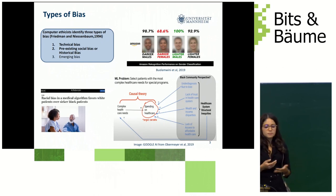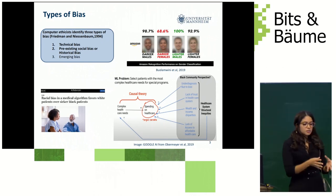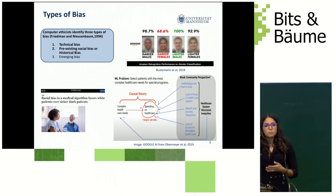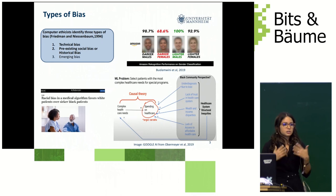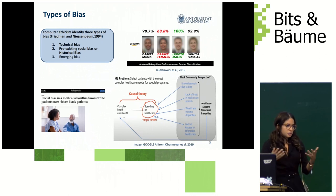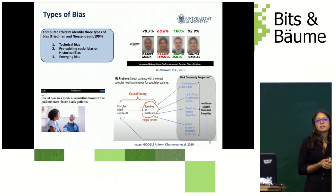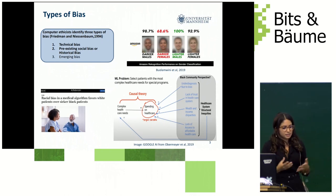An example is a medical algorithm intended to identify patients with the most complex healthcare needs. The programmers, with all good intention, thought they could predict complex healthcare needs from how much money a patient spends on their healthcare. But this causal theory, which evolved from their own lived experiences, unfortunately ignored the pre-existing social bias that in the United States there is a racial gap in access to healthcare, a wealth gap, and other structural inequalities in the healthcare system — creating emergent bias, new biases created from the model.